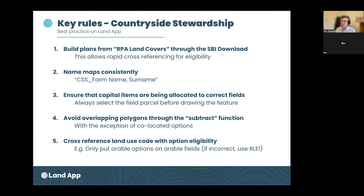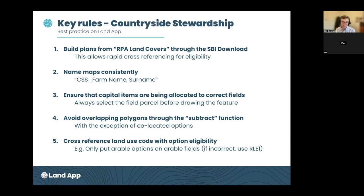Rule number four: try to avoid overlapping polygons when you can, using the subtract function. If you've got two features, just make sure they're not overlapping — they are two-dimensional. However, there are some exceptions: some supplementary payments through countryside stewardship where options can be co-located, and I'll demonstrate how to handle that. Rule number five: cross-reference the land use code with the option eligibility. If you're putting down an arable option, please ensure you're putting it in an arable field.